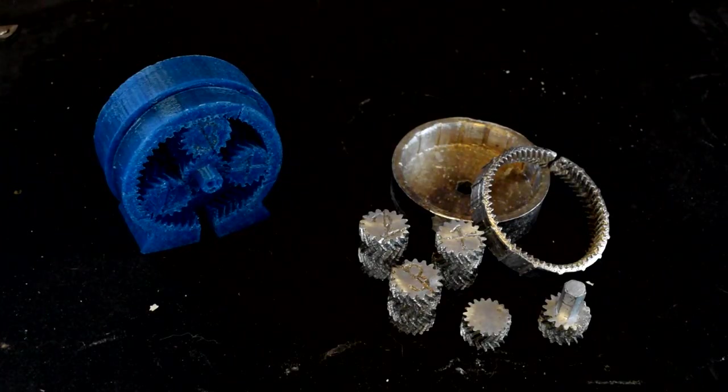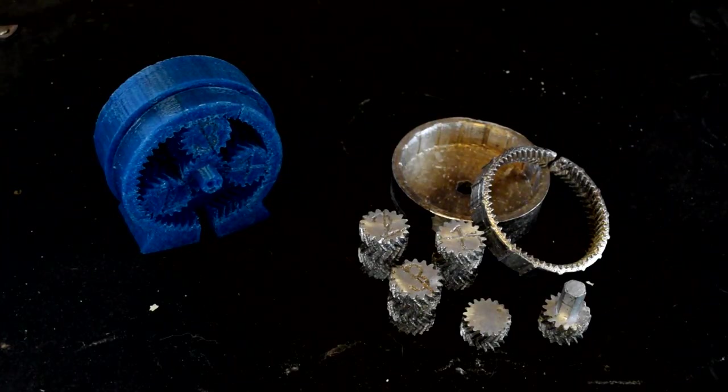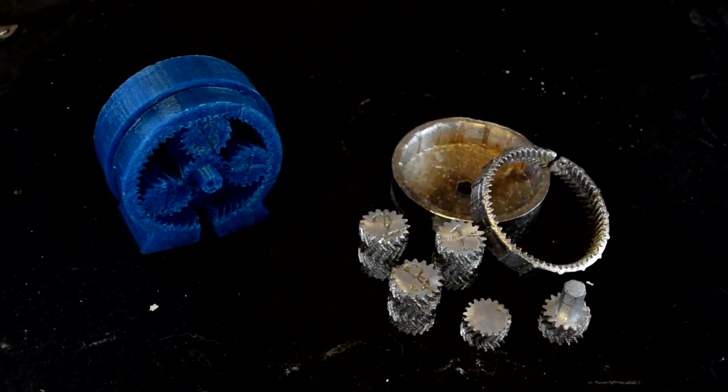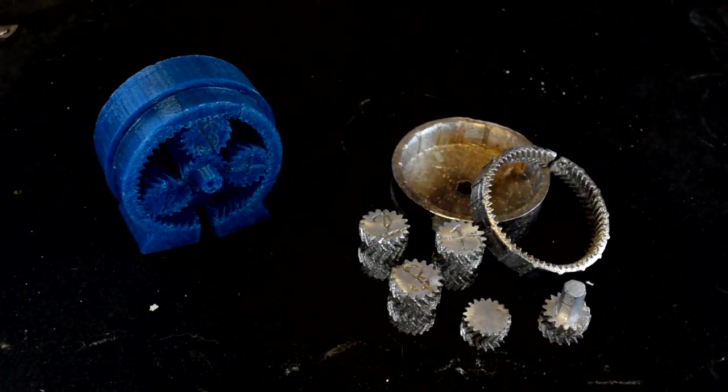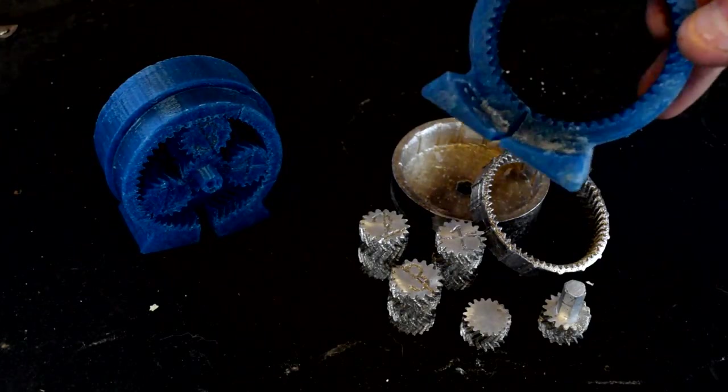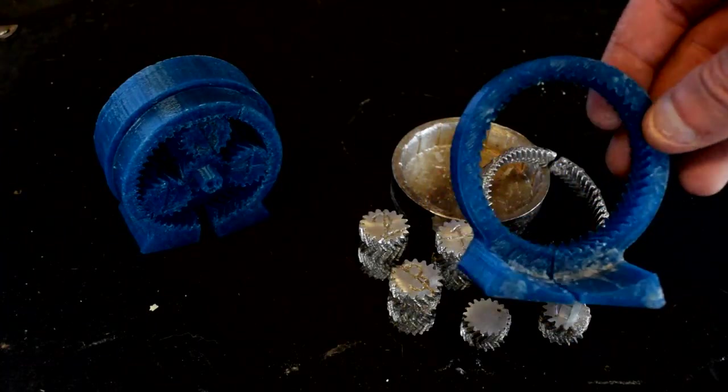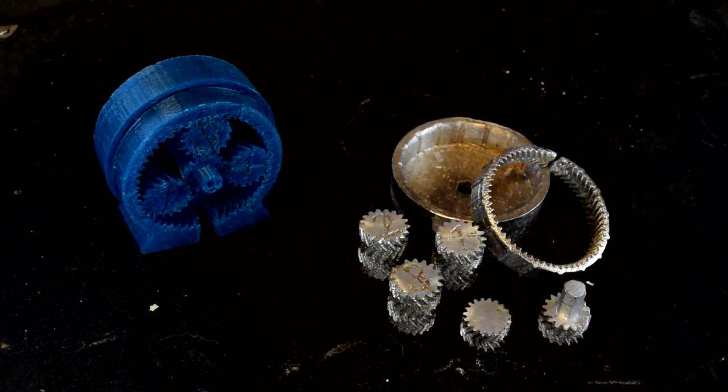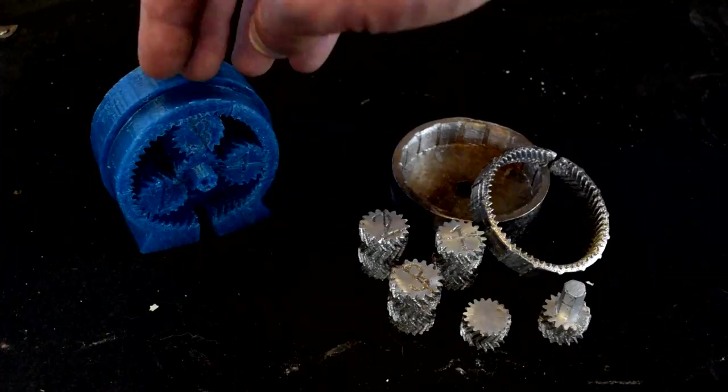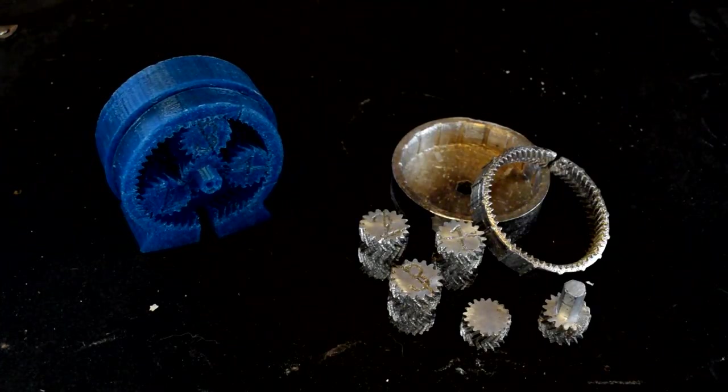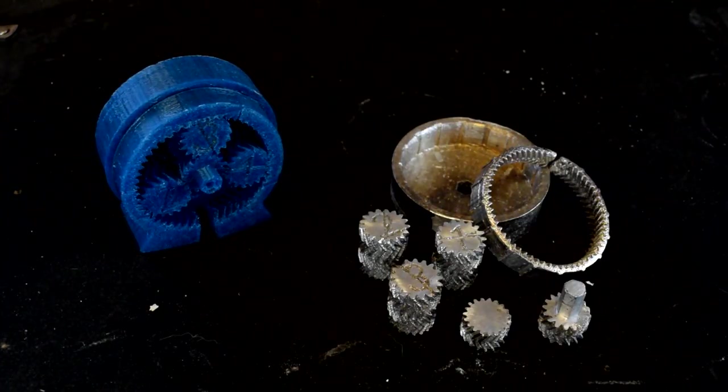Alright guys, welcome back to Project Tube and to part four of casting Gear Down For What's planetary gearbox. We are almost to the finish line. We have one last part to cast, the input ring gear, and then we can start assembling it much like it's shown here and see if it all fits together and if this whole thing worked or not. So let's get started.